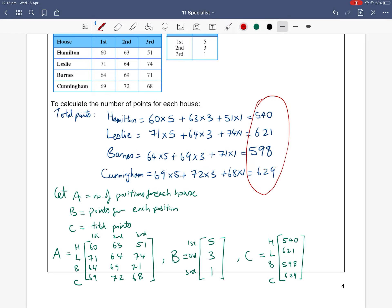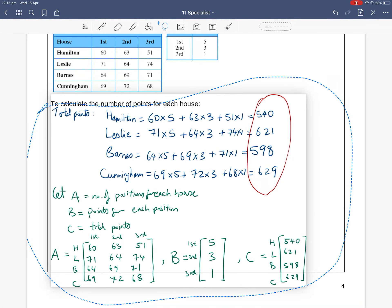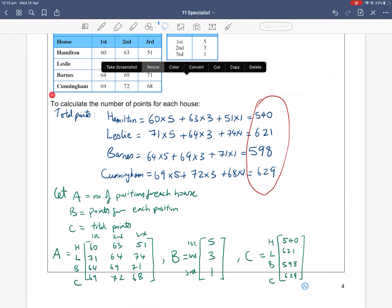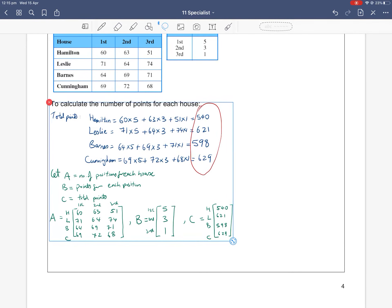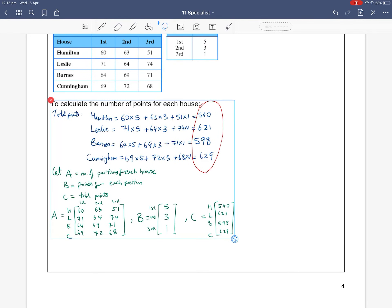And this is how the next step is how we define matrix multiplication. So I have three matrices: this is a four by three matrix, this is a three by one matrix, and then this is a four by one matrix. So the first matrix is how many people came in the first, second, and third positions.